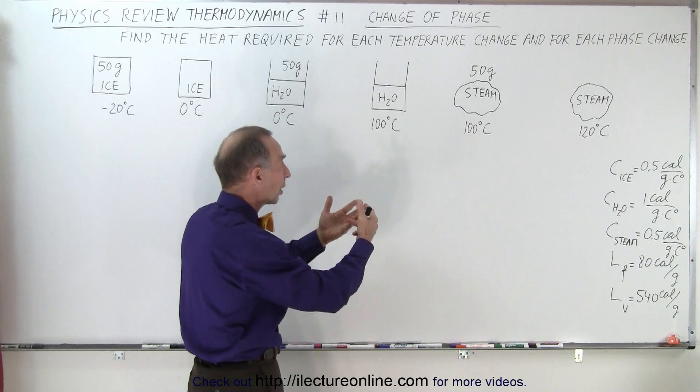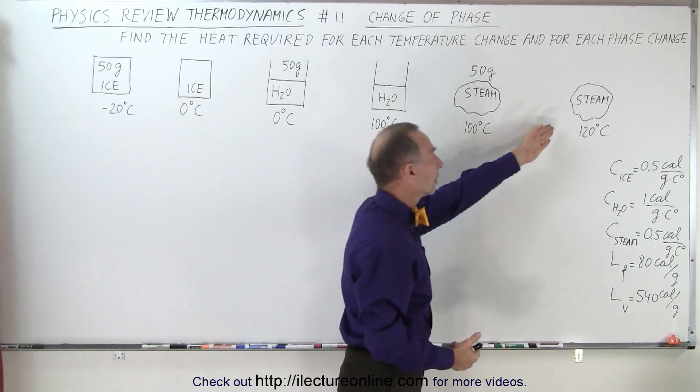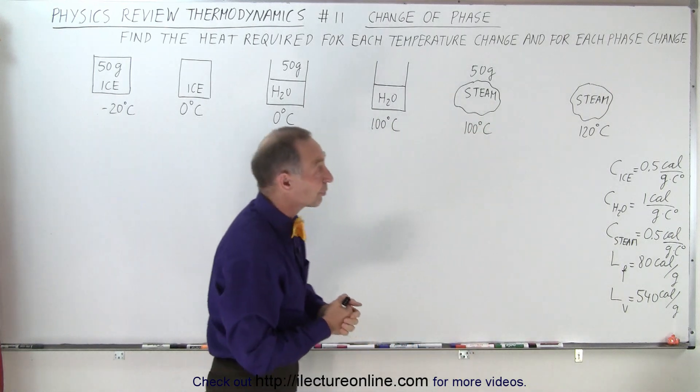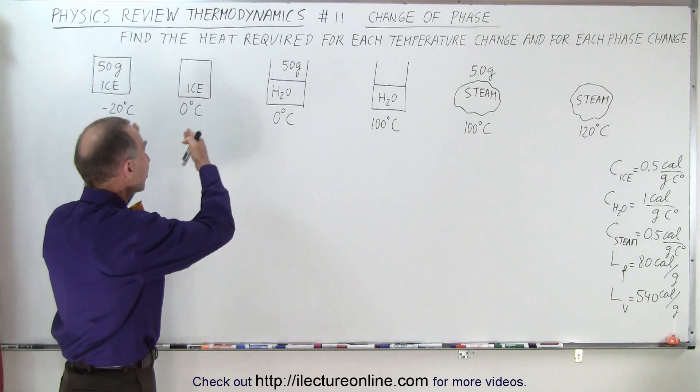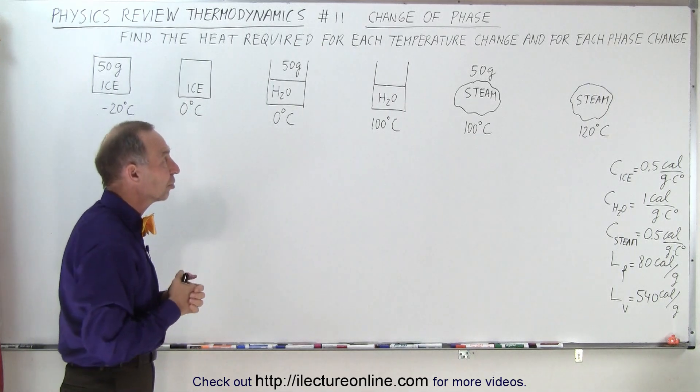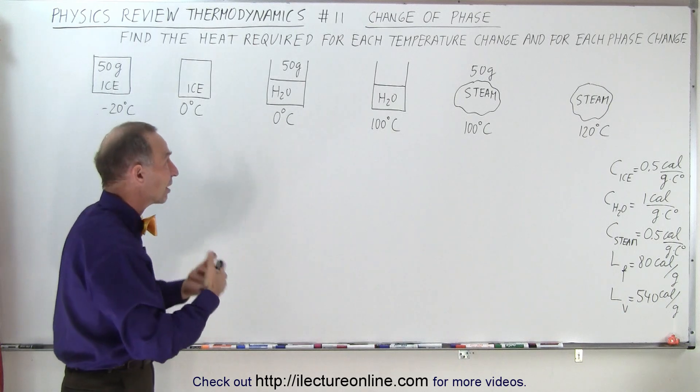Then we continue to heat it and turn the water, the hot water, into steam. And then eventually we continue to add heat to the steam, and now the steam reaches a temperature of 120 degrees Celsius. The question is, how much heat does it take in each stage of that process for each change of the temperature and for each phase change?